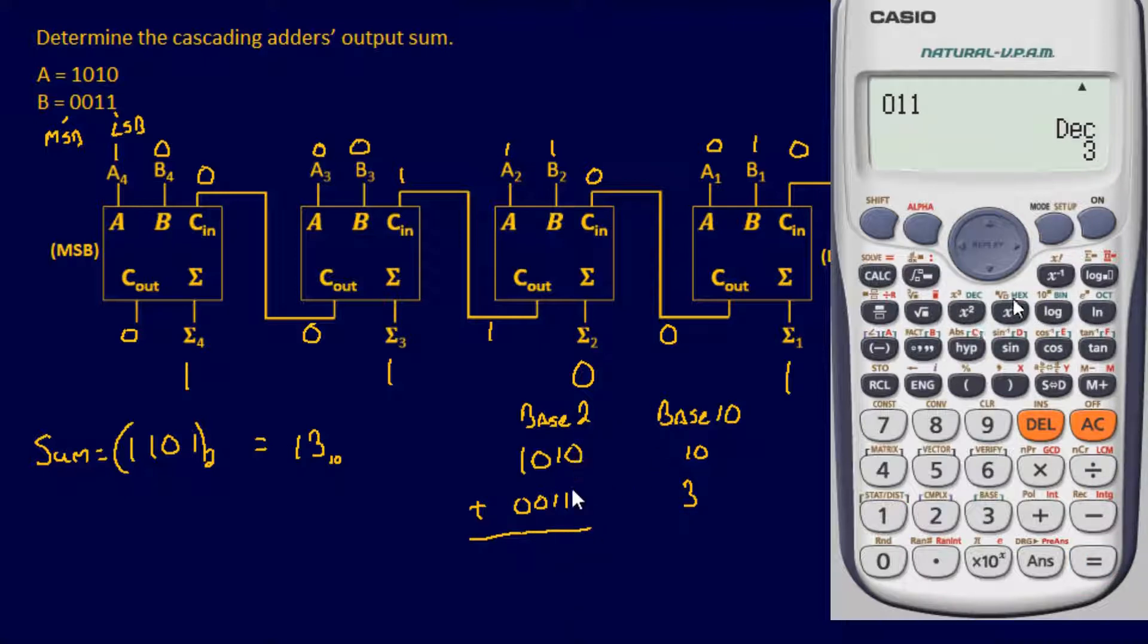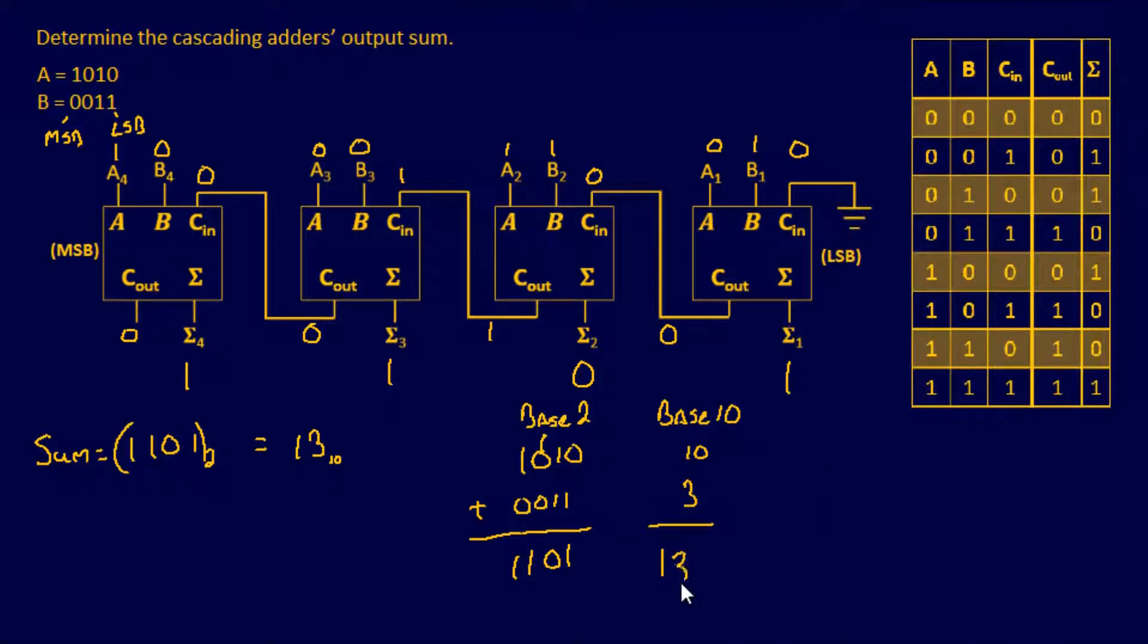0 plus 1 is 1. 1 plus 1 is 0 with a carry. 0 plus 0 plus 1 is 1. And then 1 plus 0 is 1. And of course, if you add decimals together, 10 plus 3 is 13. So this confirms our answer.